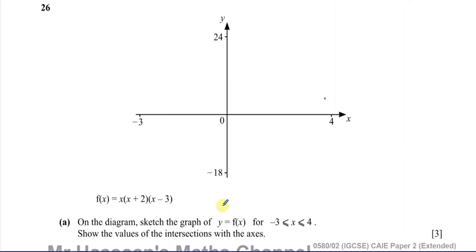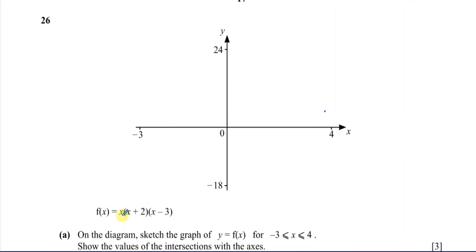We're given the function f(x) = x(x+2)(x-3). On the diagram, sketch the graph of y = f(x) for x between -3 and 4. Show the values of the intersection with the axes. This graph is a cubic graph because if you expand the brackets, you're going to get x cubed as the highest power.